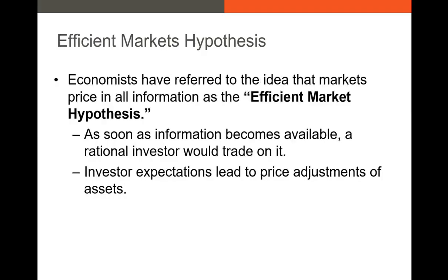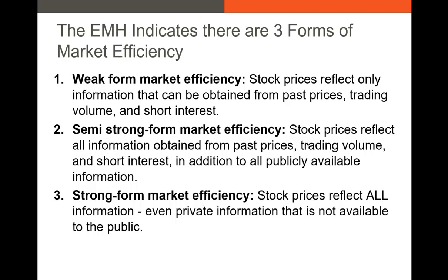So what is the efficient markets hypothesis? We often call the efficient markets hypothesis this idea that as soon as information becomes available, a rational investor will trade on it and that will make share prices and other asset prices reflect all available information. We have three forms of the efficient markets hypothesis. The weak form essentially says that stock prices reflect all information that can be obtained using past prices, trading volume, and short interest.